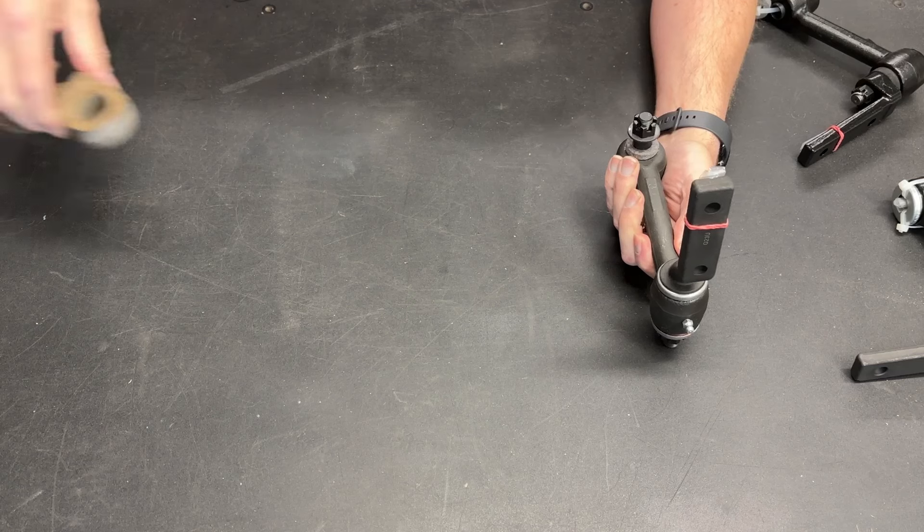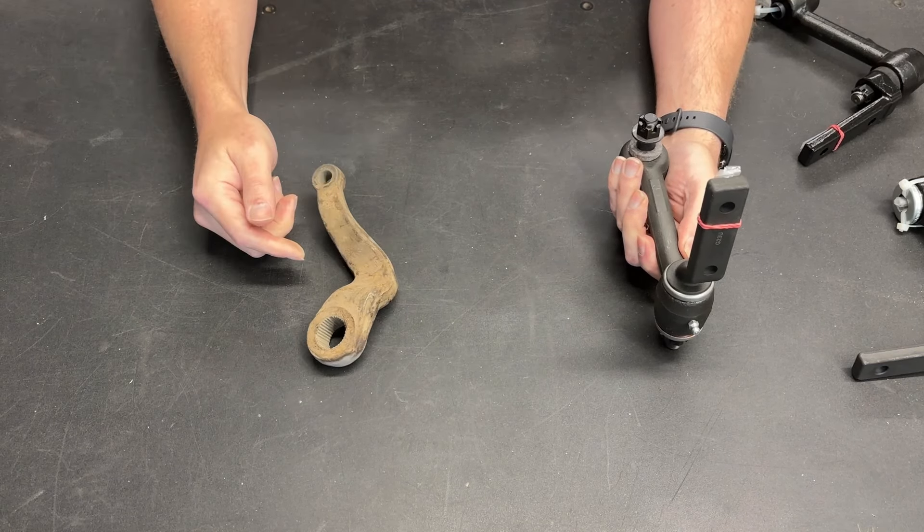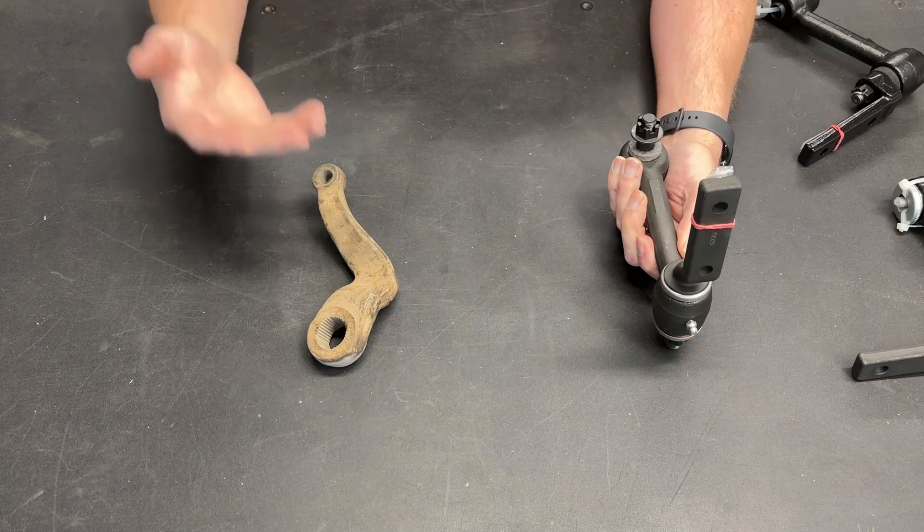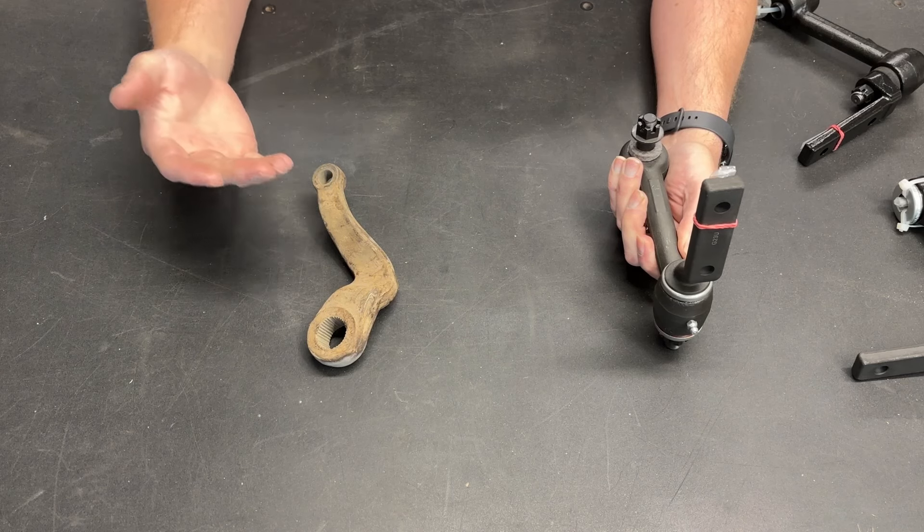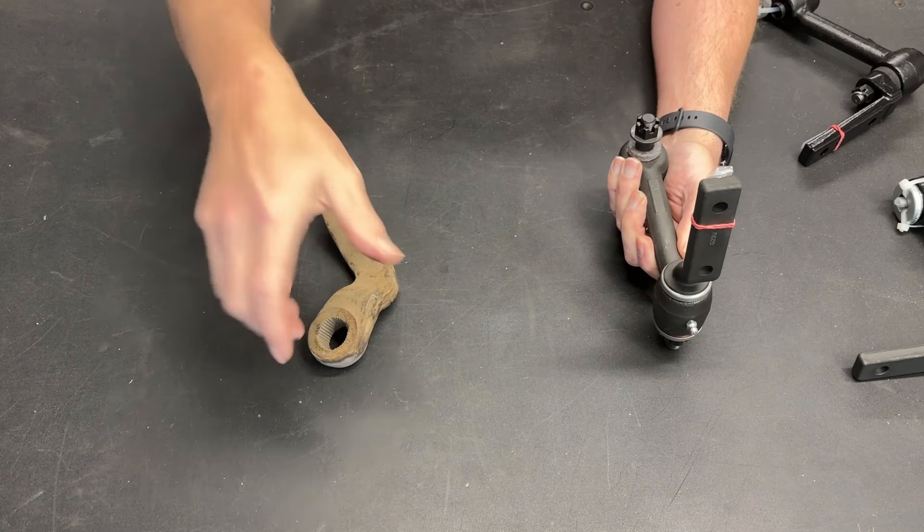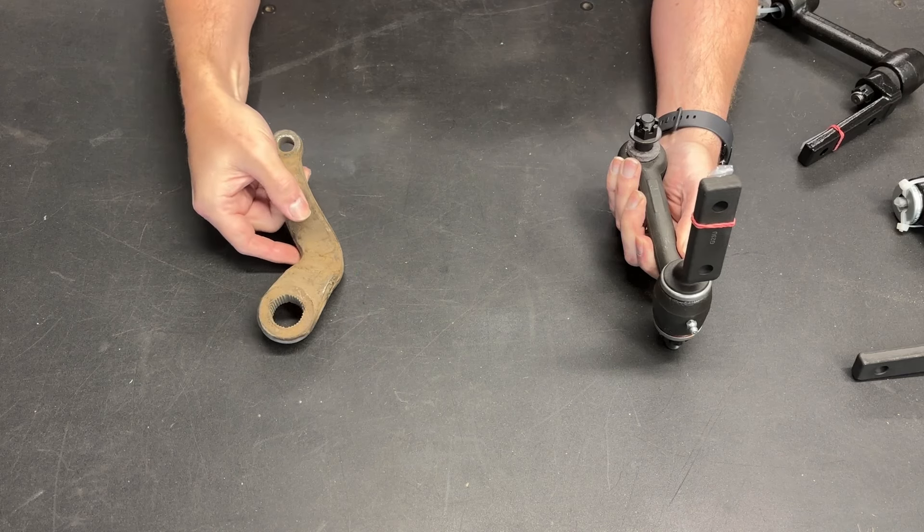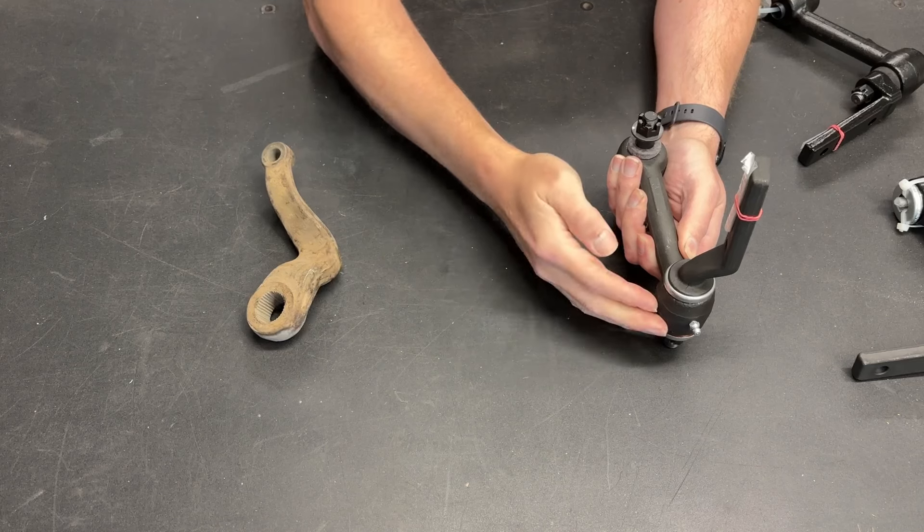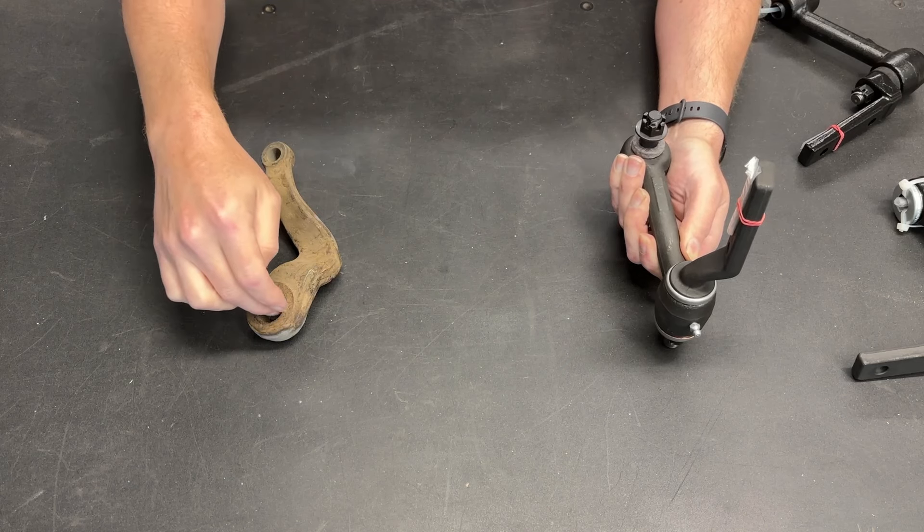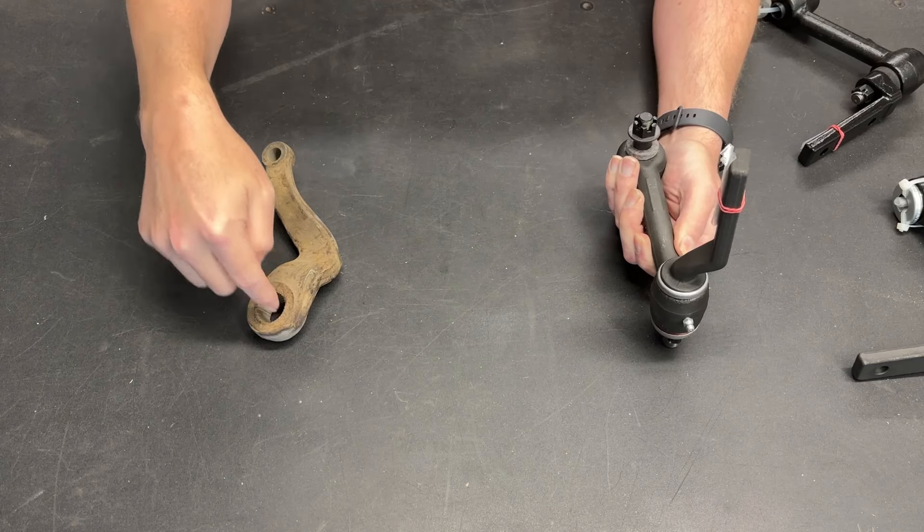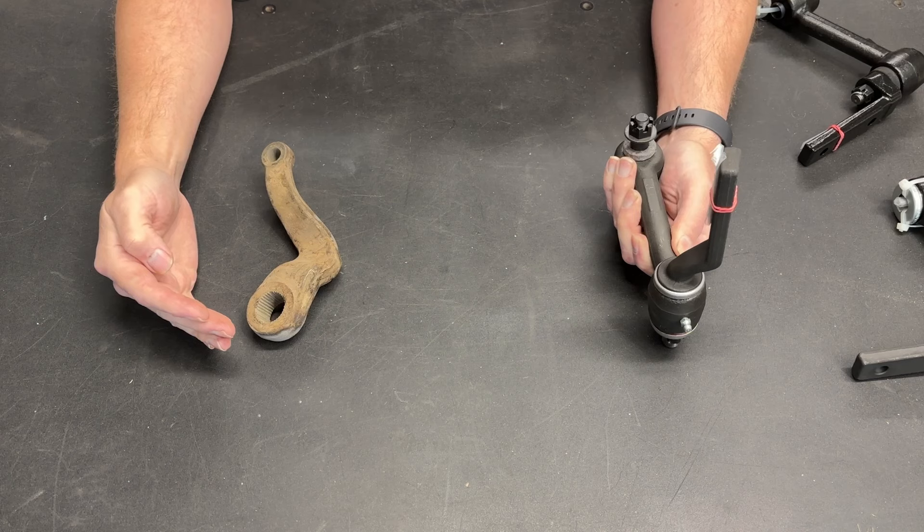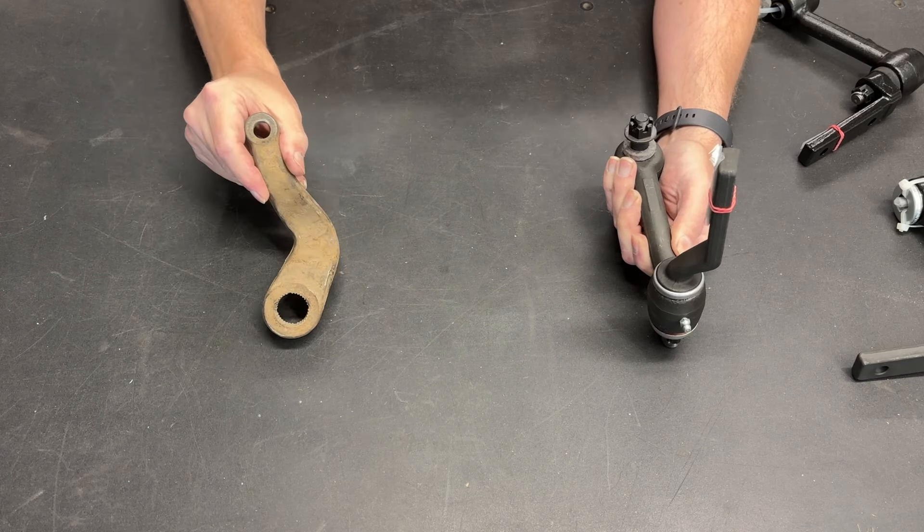We're going to hold this here. This is a pitman arm, now this is not a pitman arm from a Mustang. I didn't have a Mustang pitman arm, but the way it works is the same concept so I'm able to show you how it works and why any of this even matters. So your steering box comes in and your pitman arm attaches to it. On the other end of the suspension you have your idler arm which attaches to the frame, and this pivot and this pivot are lined up.